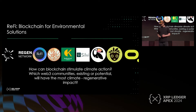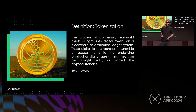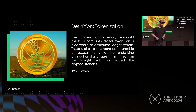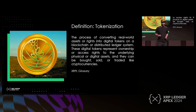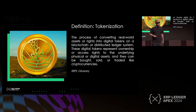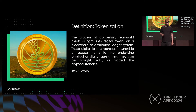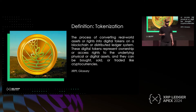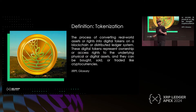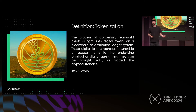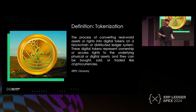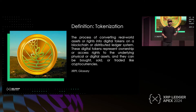Now to get into it, we'll start with some definitions. First, taken from the XRPL glossary: the process of converting real-world assets or rights into digital tokens on a blockchain or distributed ledger system. Digital tokens represent ownership or access rights to the underlying physical or digital assets, and they can be bought, sold, or traded like cryptocurrencies. In our case, the real-world assets pertain to nature — what is planted, produced, and the environmental indicators around that.